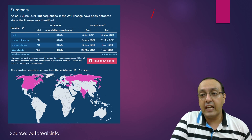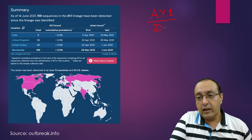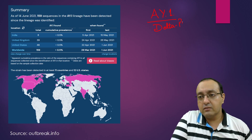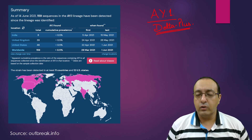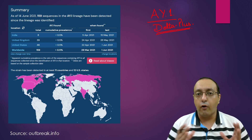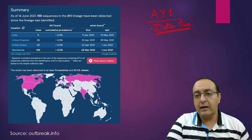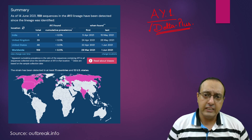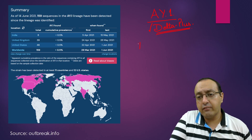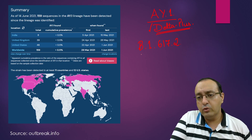This new variant is called the Ay.1 variant in scientific lineage nomenclature, and Delta Plus in layman's language. So Ay.1 is the official nomenclature; Delta Plus is what journalists and laypeople refer to it as. It is actually a derivative of B.1.617.2, which was the Delta variant.